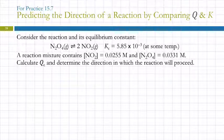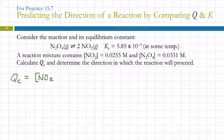So calculating QC is the same process as calculating K. But we're just going to use the concentrations given. So QC will equal the concentration of the product squared divided by the concentration of the reactant.